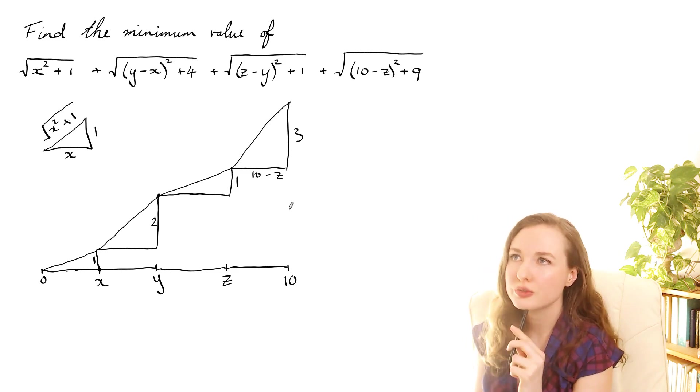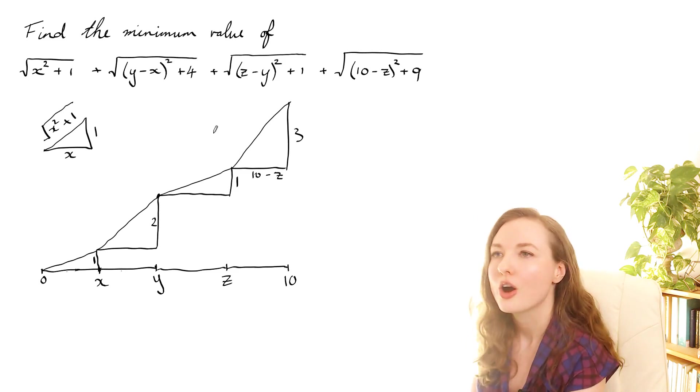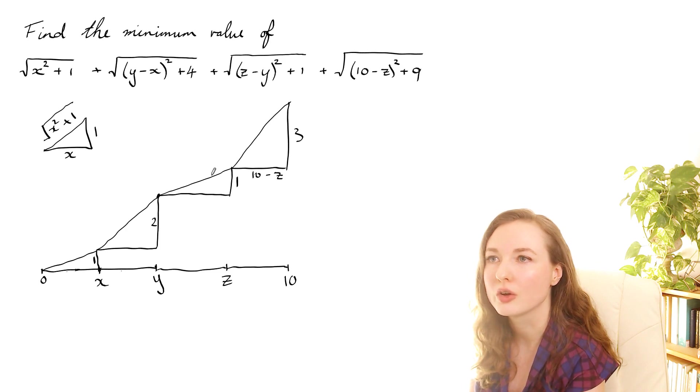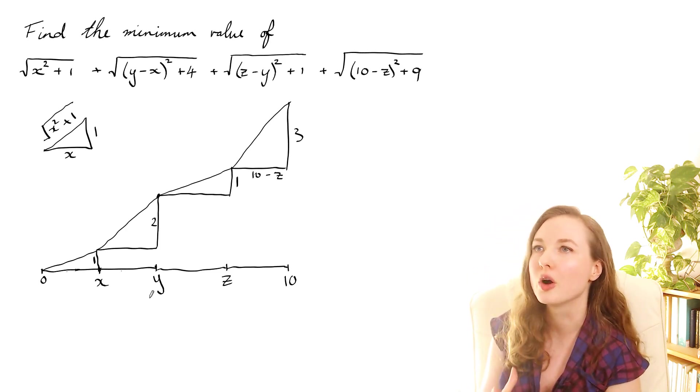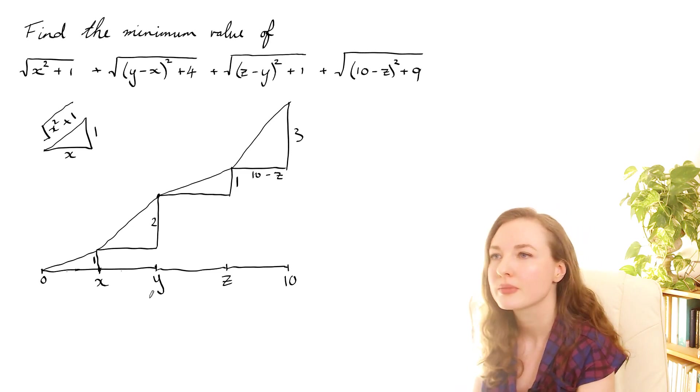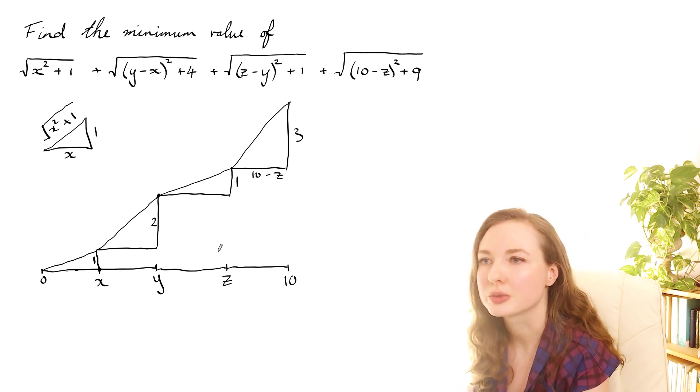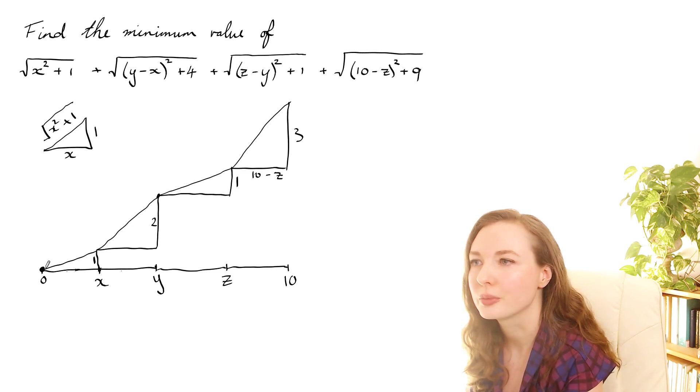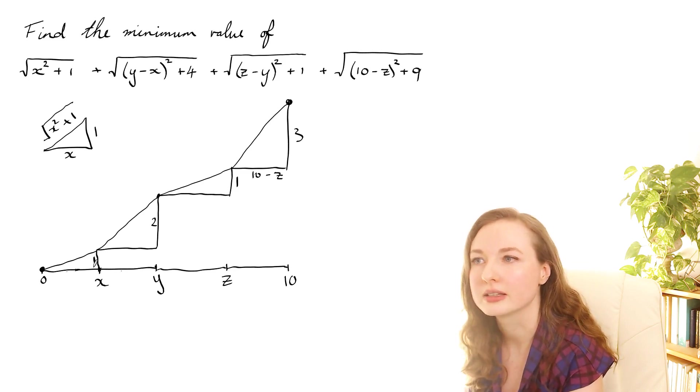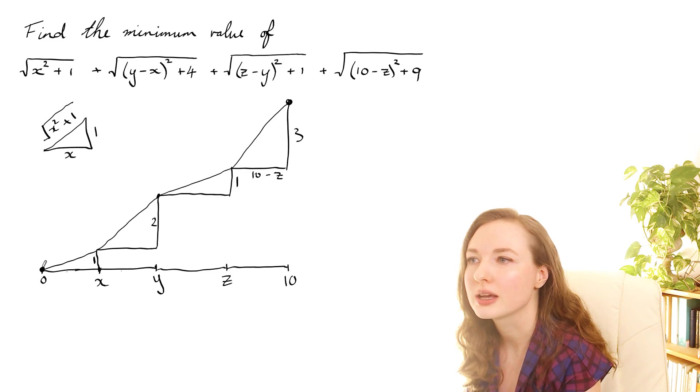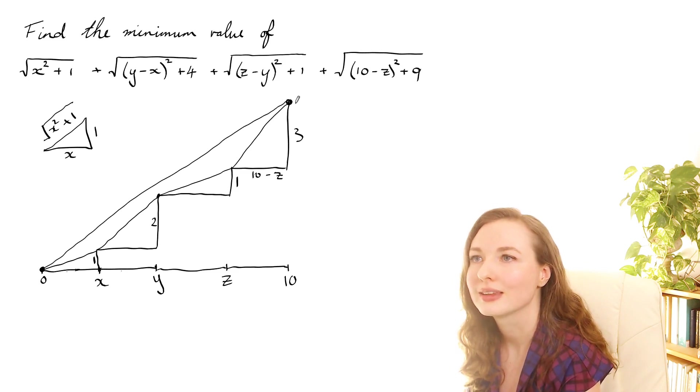Okay and then we want to find the minimum value of that total distance as you travel along here. So we can pick x, y, and z to be whatever we want in order to minimize that distance, but no matter what values of x, y, and z you choose you're going to be traveling from here to there and that point is always going to be at the same place because that's at 10 and that height is set by these heights. So the shortest distance from there to there is just going to be a straight line like that.